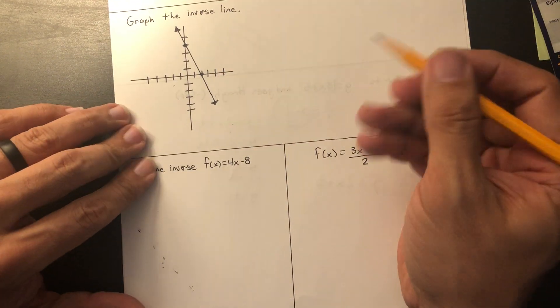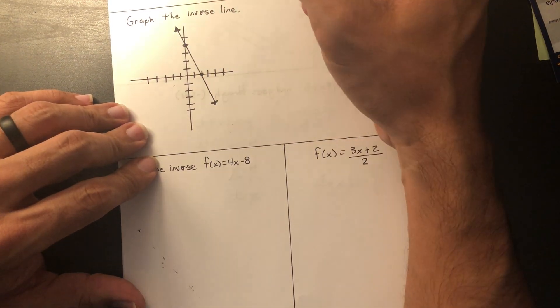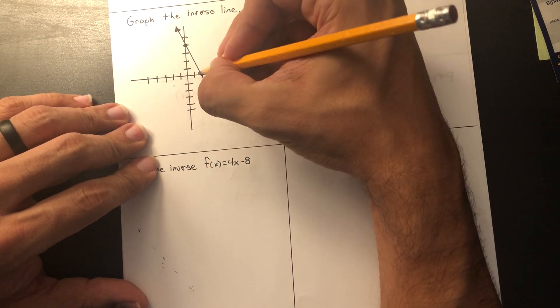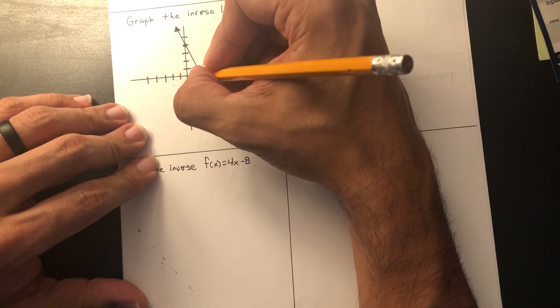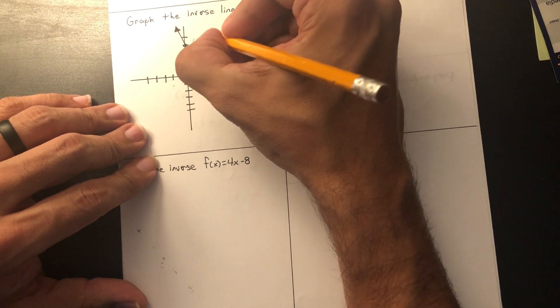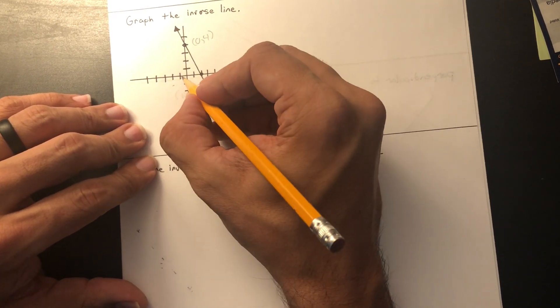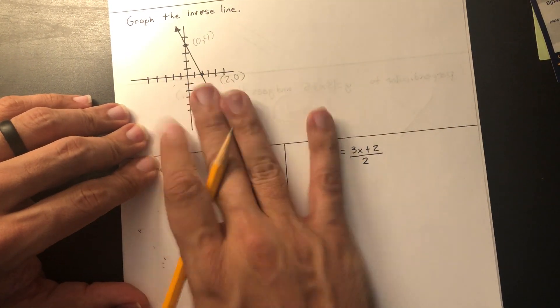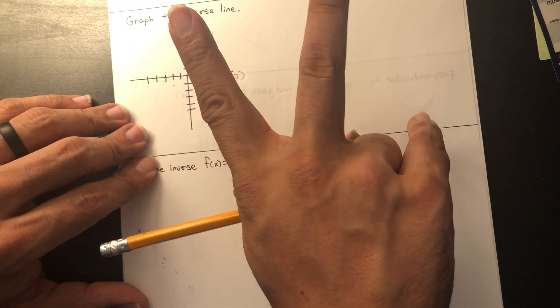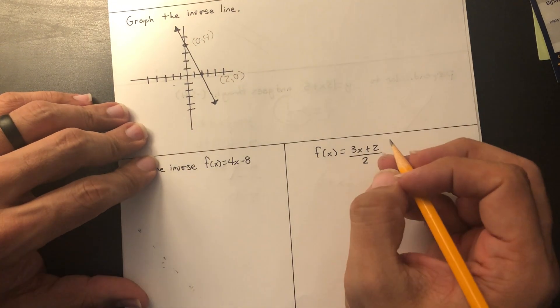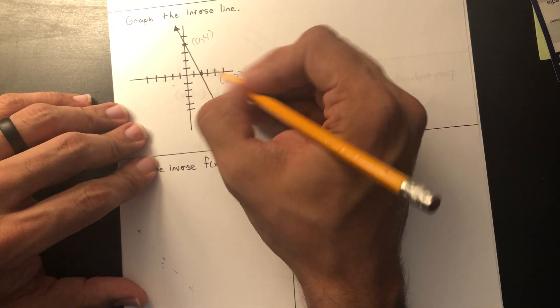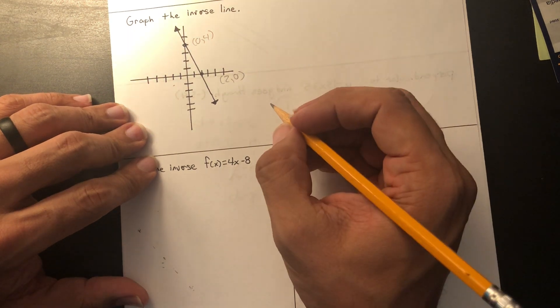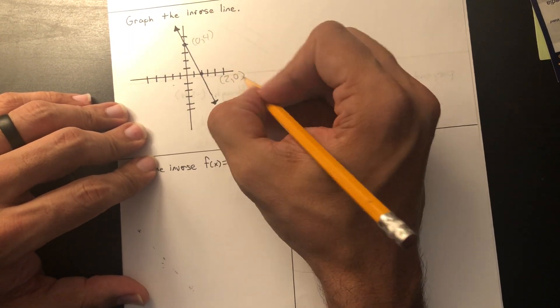So what about this one? Normally graphs aren't marked like this, but because I didn't have lines, I had to do it like this. You find two dots that are on the line and you find what their coordinates are. This one's going to be 0, 4, and this one here is going to be 2, 0. To find the inverse line of this, all I need to find is two dots, find their inverse, and then plot those dots. They're not always going to be the x-intercept and the y-intercept, but in this situation, they were.